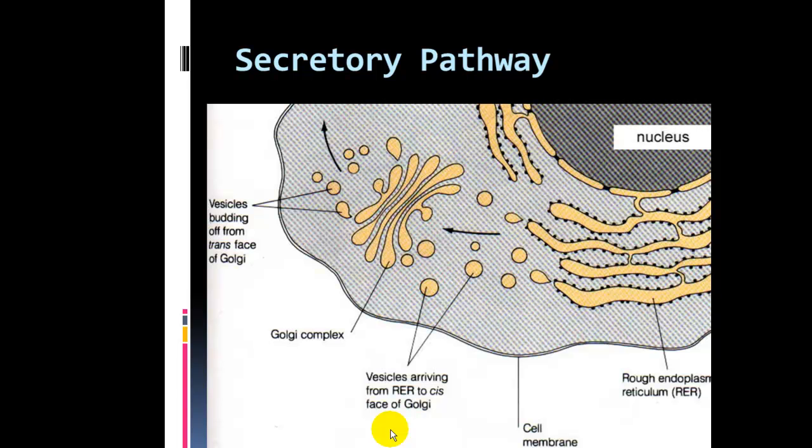So once again, secretory pathway, beginning with the RER, would be making a protein. Rough endoplasmic reticulum, the ribosome is what actually assembles the protein. And the protein would then move, migrate through the RER, packaged into a vesicle. And then this vesicle would move on over to the Golgi, get modified, sorted, packaged, put into another vesicle, and then move to the cell membrane and get exported out of the cell, moving into the bloodstream.